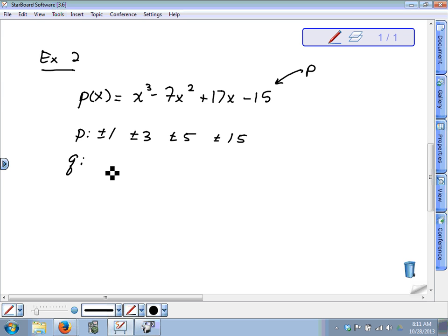So the factors of p. This is where we get the factors of p. That's not too bad. Plus or minus one. Plus or minus three. Plus or minus five. And plus or minus 15. The values of q, or the factors of q. Plus or minus one?